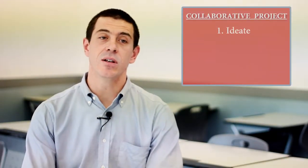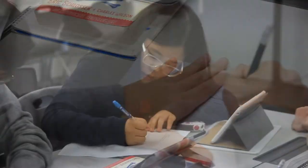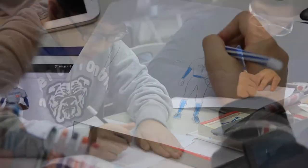The first step of the collaborative project is the ideate section. I give each group a handout and the handout has roles for each student. I've broken the roles into a scriptwriter, a lead artist, a camera person, and the leader.